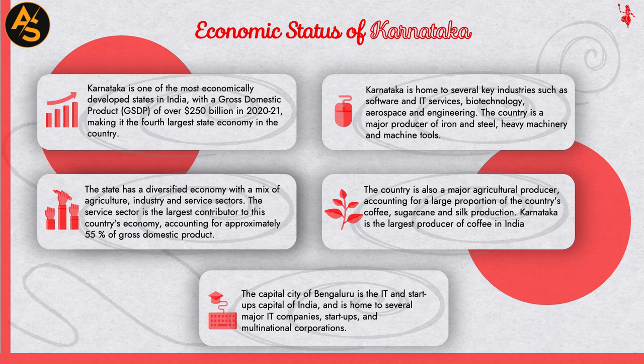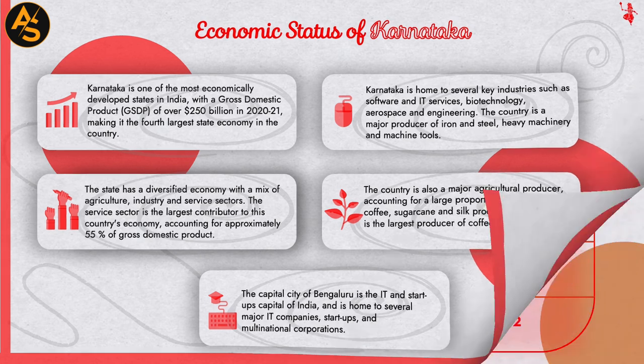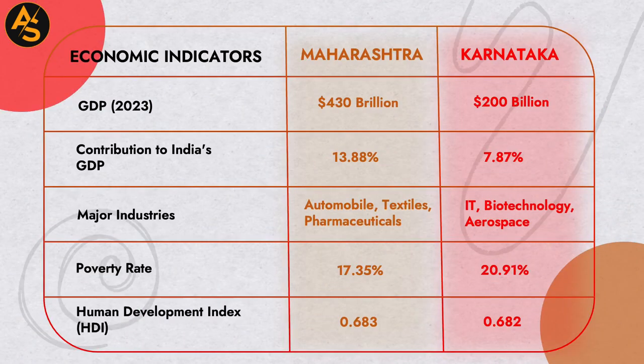Karnataka is a major producer of iron and steel, heavy machinery, and machine tools, and is also a major agricultural producer, accounting for a large proportion of the country's coffee, sugarcane, and silk production. Karnataka is the largest producer of coffee in India. The capital city of Bengaluru is the IT and startup capital of India, home to several major IT companies, startups, and multinational corporations.